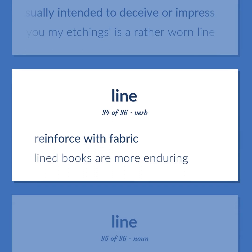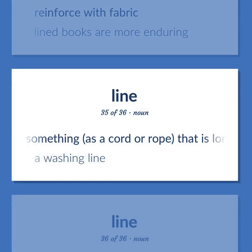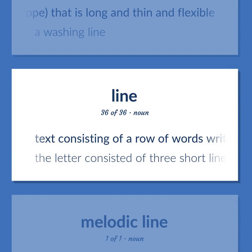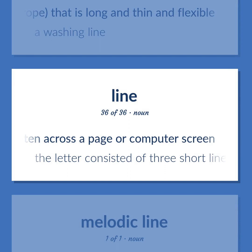Reinforce with fabric. Lined books are more enduring. Something, as a cord or rope, that is long and thin and flexible. A washing line. Text consisting of a row of words written across a page or computer screen. The letter consisted of three short lines.